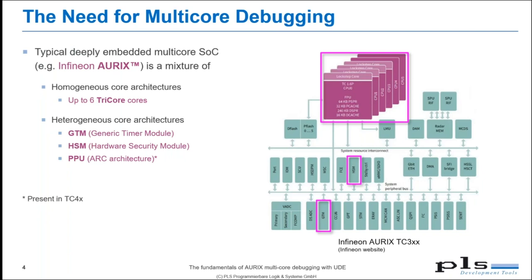Here on the right side you see a typical Infineon Aurix microcontroller block diagram. The Aurix is a typical example of a deeply embedded multi-core system on chip. In contrast to multi-core architectures we know from PCs or consumer electronics, multi-core controllers in the embedded domain address completely different applications — automotive, industrial — basically everything that needs real-time capabilities and also safety features.